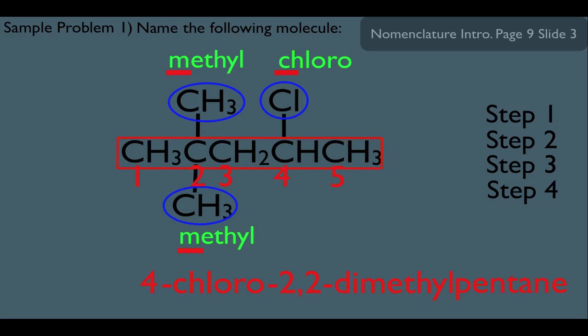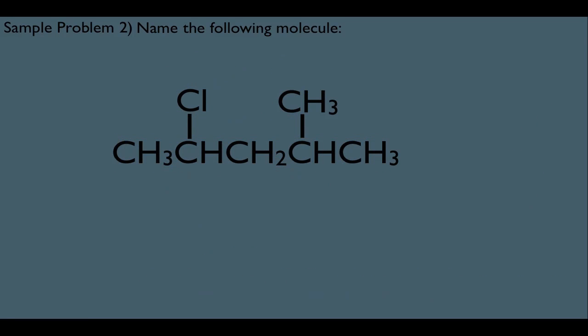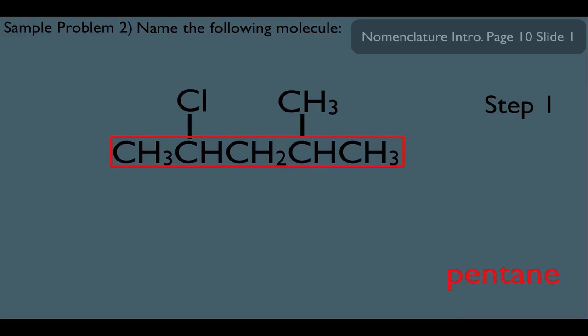So in this particular example, I'm pointing out how to number the carbons correctly when you happen to be in a situation like this. But notice, look at this next example here. Watch how the numbering of the carbons, step two, works in this case. Let's first start with step one here. Our longest chain would be this right here, making the parent name of this molecule pentane.